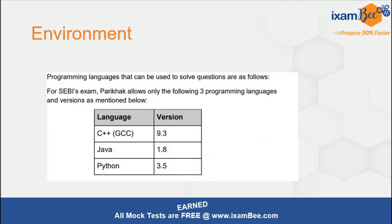Now regarding the environment - for C++, Java, and Python, these three languages are allowed in the exam. The compiler versions are: for C++ it is GCC 9.3 which is pretty much outdated compared to what we use today, for Java it is 1.8, and for Python it is 3.5. Start preparing at least up to this level and get to know what libraries are supported. If you are using something with C++ version 11, 14, or 17, you might have extra concepts, libraries, and API support that you cannot use in GCC 9.3. Make sure whichever version you use aligns with the environment SEBI provides.